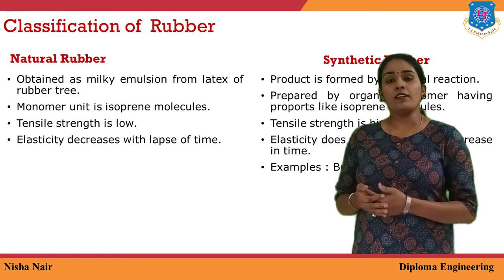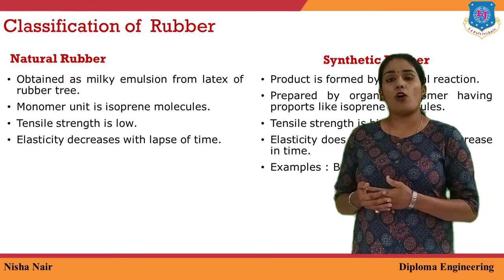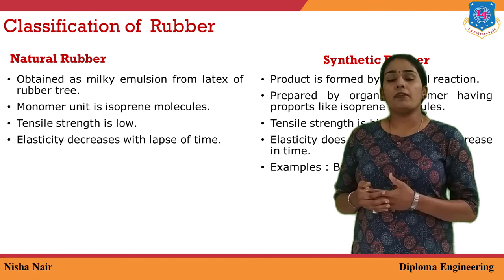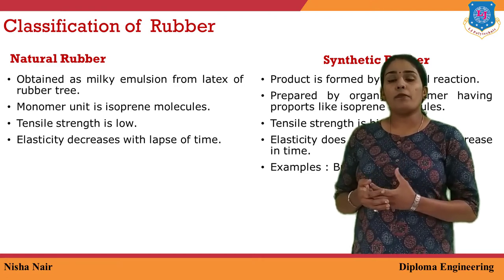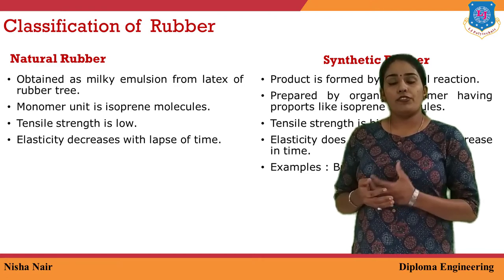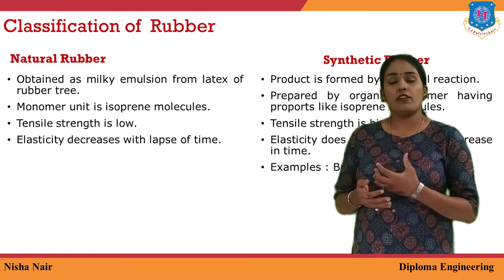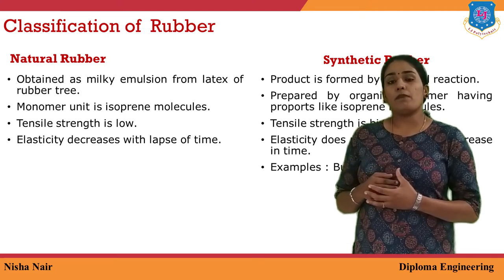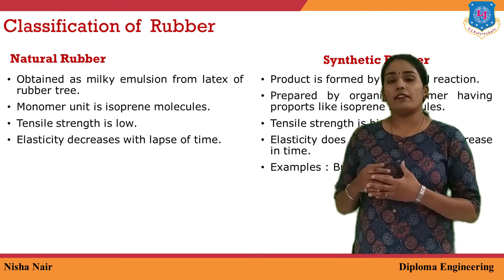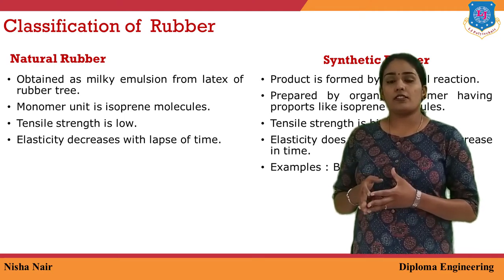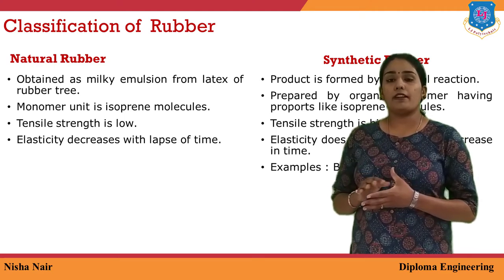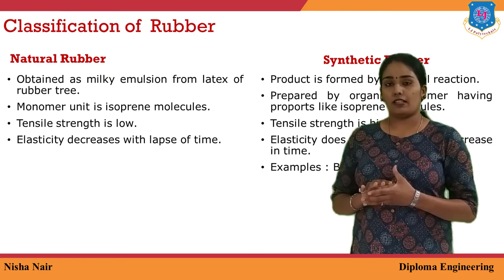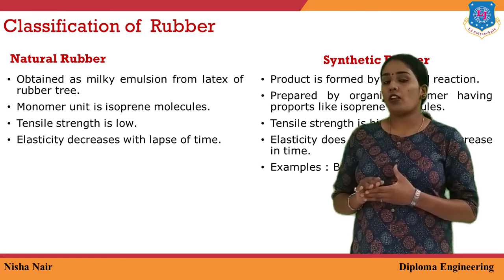Natural rubber is obtained in the form of a milky liquid from the sap of trees — it is obtained directly from trees. Synthetic rubber, on the other hand, is completely prepared in the laboratory, which is why it is known as synthetic rubber.